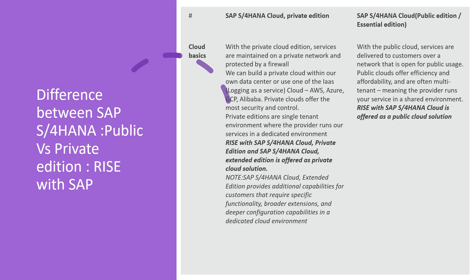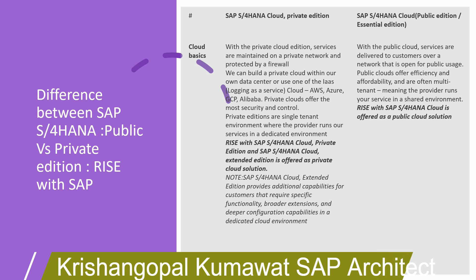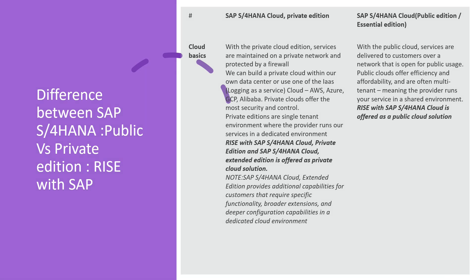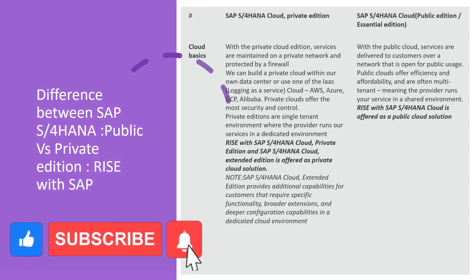Before knowing the difference you have to know the basic cloud methodologies. For SAP S/4HANA Cloud Private Edition, services are maintained on a private network and protected by a firewall. You can build a private cloud within your own data center or use a cloud provider like AWS, Azure, GCP, or Alibaba. Private clouds offer the most security and control.